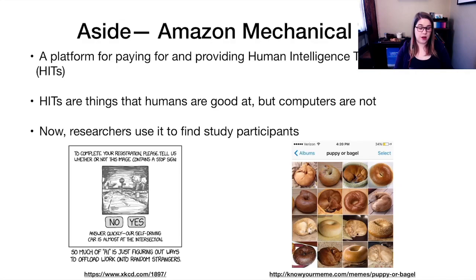And HITs are things that humans are good at, but computers are not. This gets used a lot in computer science research. So oftentimes in computer science research, researchers want to be able to say, we want this algorithm to be able to distinguish between different kinds of images. But you need ground truth data. So you need tagged images. And you can ask humans to do the hand tagging for you. Then you could feed that into a machine learning algorithm.